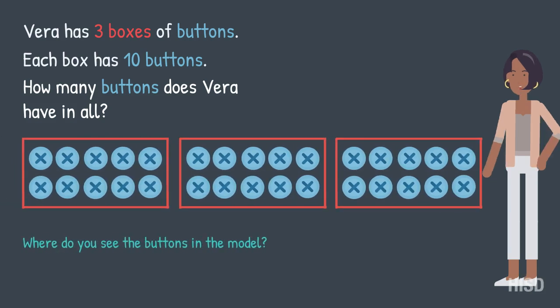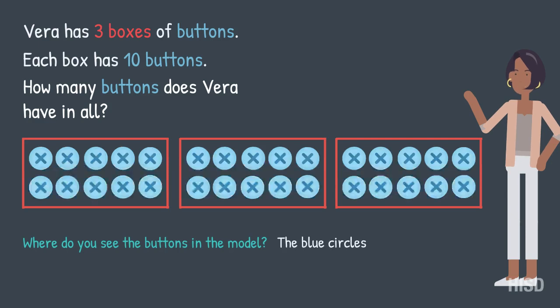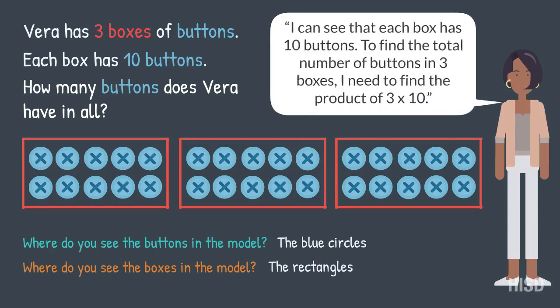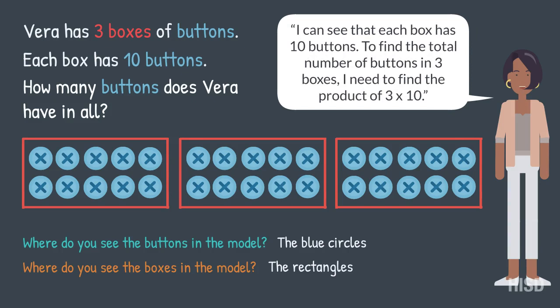Where do you see the buttons in the model? That's right, the blue circles. Where do you see the boxes in the model? The rectangles. So I can see that each box has ten buttons. To find the total number of buttons in three boxes, I need to find the product of three times ten.